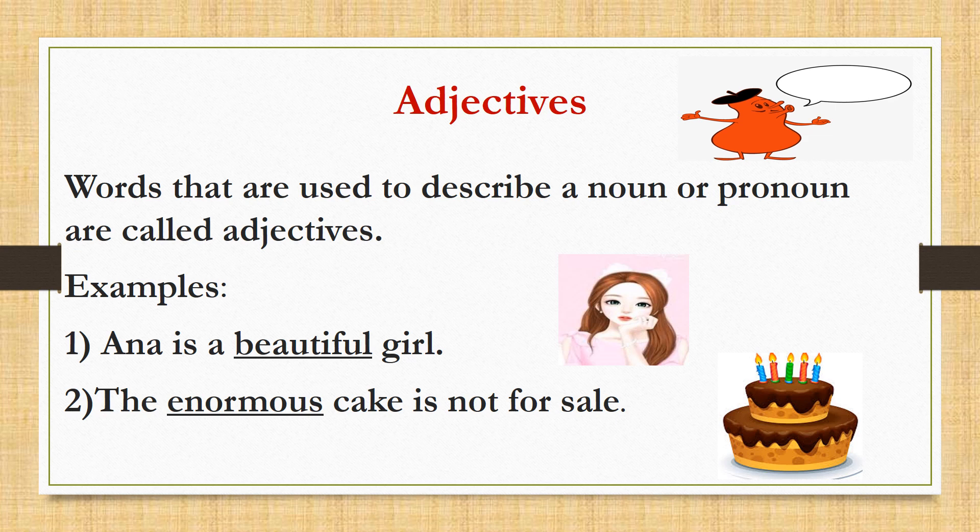The word beautiful here gives us more information about the girl in the sentence. Let's look at the second sentence: The enormous cake is not for sale. Let us identify the noun here. So we have cake, a noun, and sale is a noun as well. But which one is the adjective? Yes, you are guessing it right. It is the word enormous because it is giving us more information about the noun cake. So I hope it is clear to you. Now, we will be moving on to kinds of adjectives.